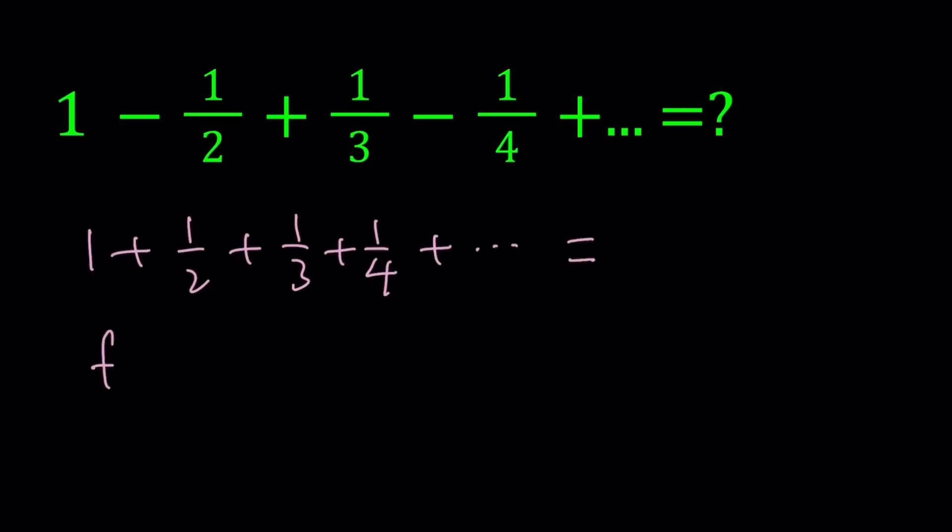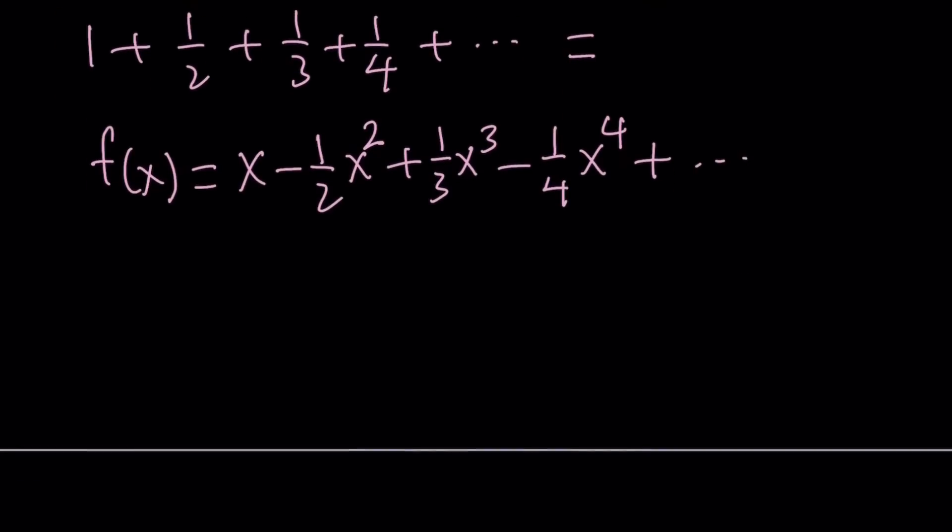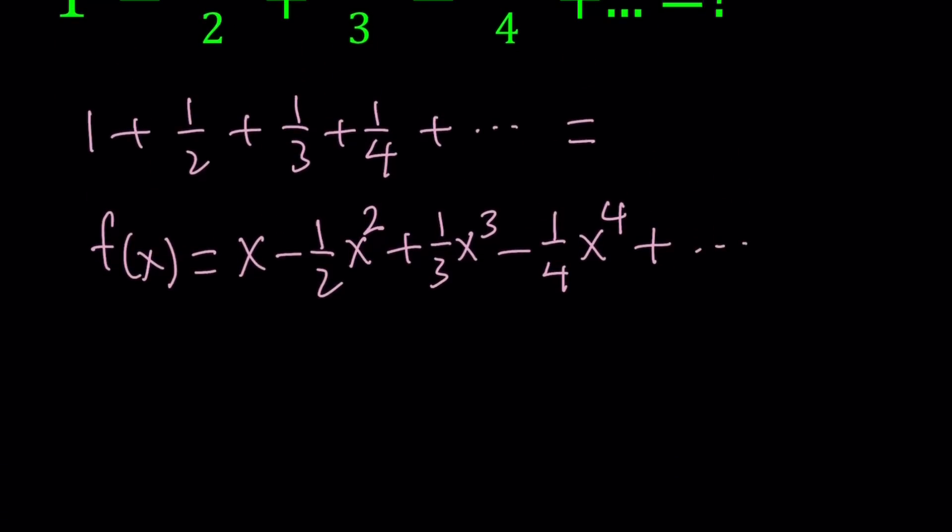So I'm going to define f(x) as x minus 1/2 x squared plus 1/3 x cubed minus 1/4 x to the fourth plus 1/5 x to the fifth and so on. I can define this as 1 over k times x to the power k and multiply that by negative 1 to the power k plus 1 so the signs can alternate. We could also write this using sigma.